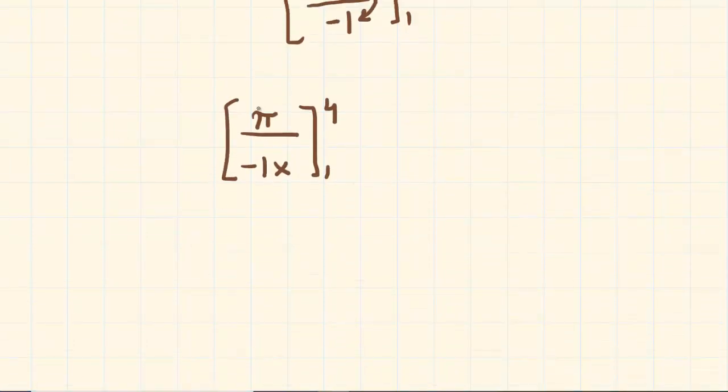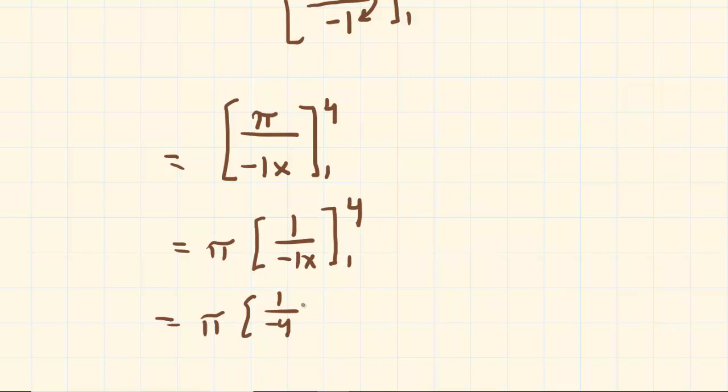It's also usually easier to factor out the pi, so in fact why don't we write pi times the quantity one over negative one x from one to four. Now we plug in the upper limit, which is four, so we're going to have one over negative four, and then subtract what we get by plugging in the lower limit, so that would be one over negative one.